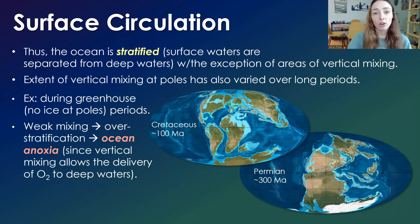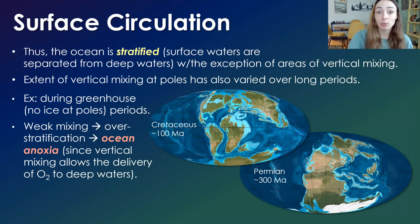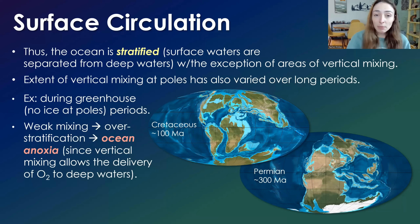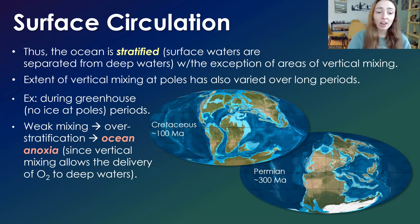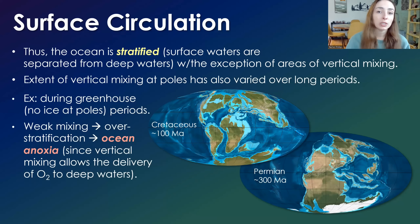The extent of vertical mixing at the poles has also varied over long geologic timescales depending on whether there was ice at the poles at all. In periods where there was no ice at the poles — for example, in the Cretaceous — there was obviously weak mixing due to the lack of downwelling and lack of density differences at the poles. This led to very strong stratification of the water column and ocean anoxia, meaning very low to zero oxygen levels in some regions of the deep water, because vertical mixing allows the delivery of oxygen from surface to deep waters. When that doesn't happen, the deep waters can become very anoxic, which is very detrimental to life.